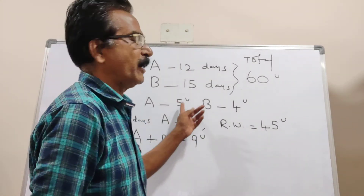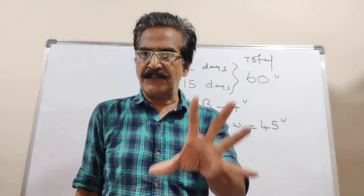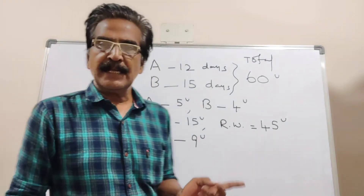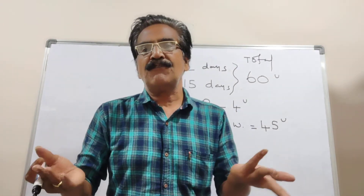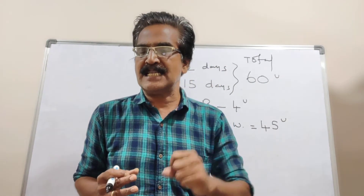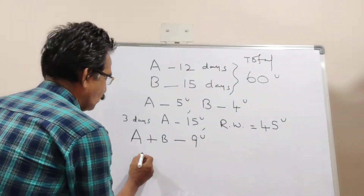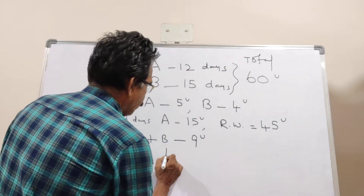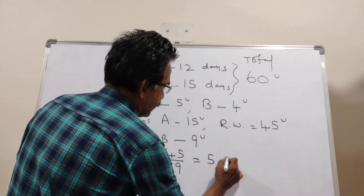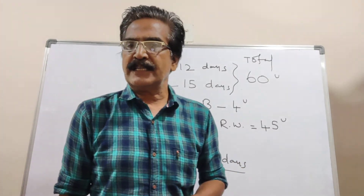Because 5 plus 4 equals 9 units of work per day. The remaining work is 45 units. A and B together can do 9 units per day, so 45 divided by 9 equals 5 days. In 5 days, A and B together can complete the remaining work.